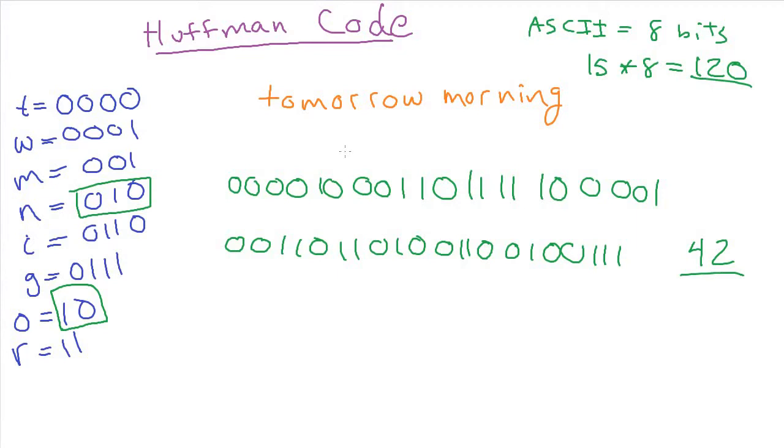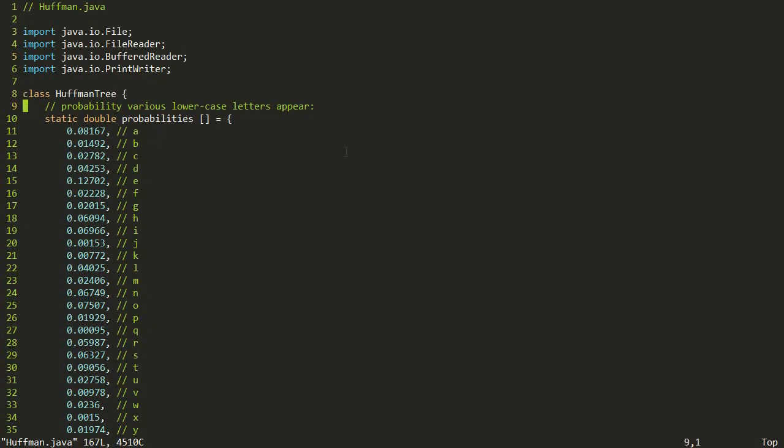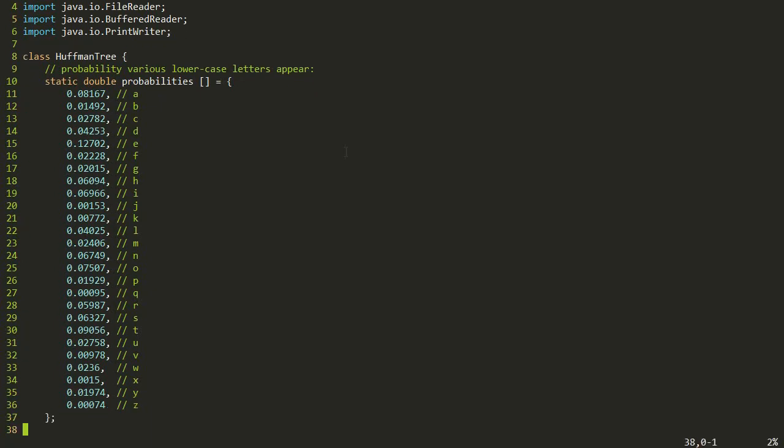So now let's look at a program that does both parts of this. It builds up the tree using the algorithm we talked about in the last video, and then it reads in text and uses the tree to do the encoding and compresses the data and writes it back out to a file. This is a little bit of an involved code example, but I think that it will be easy to understand when we go through it. The first part of this is this array called probabilities, and this is based on just sort of standard English text, which letters are the most likely to appear.